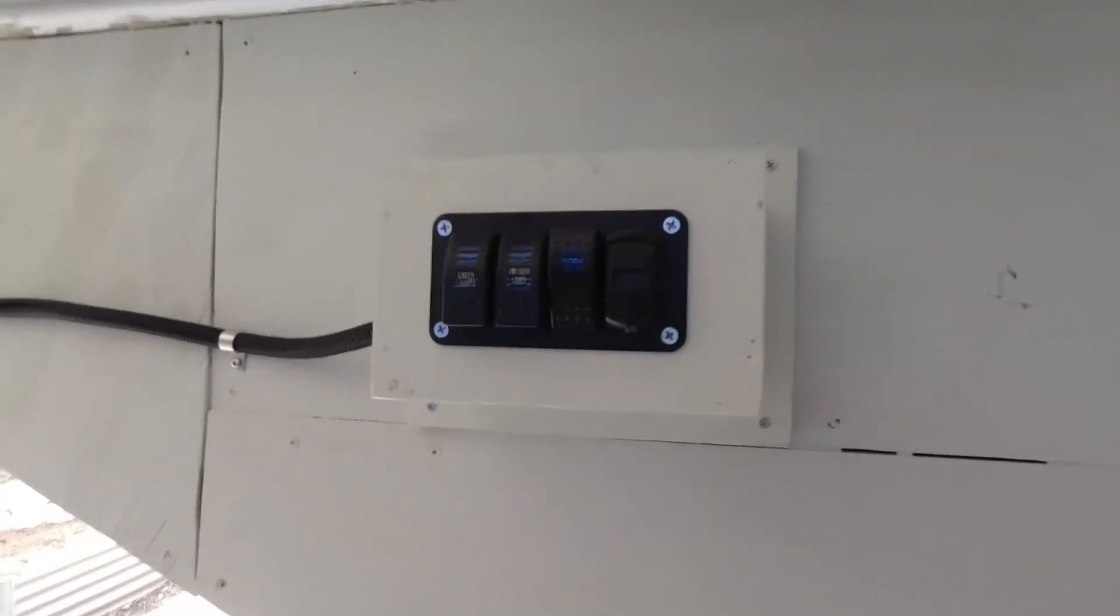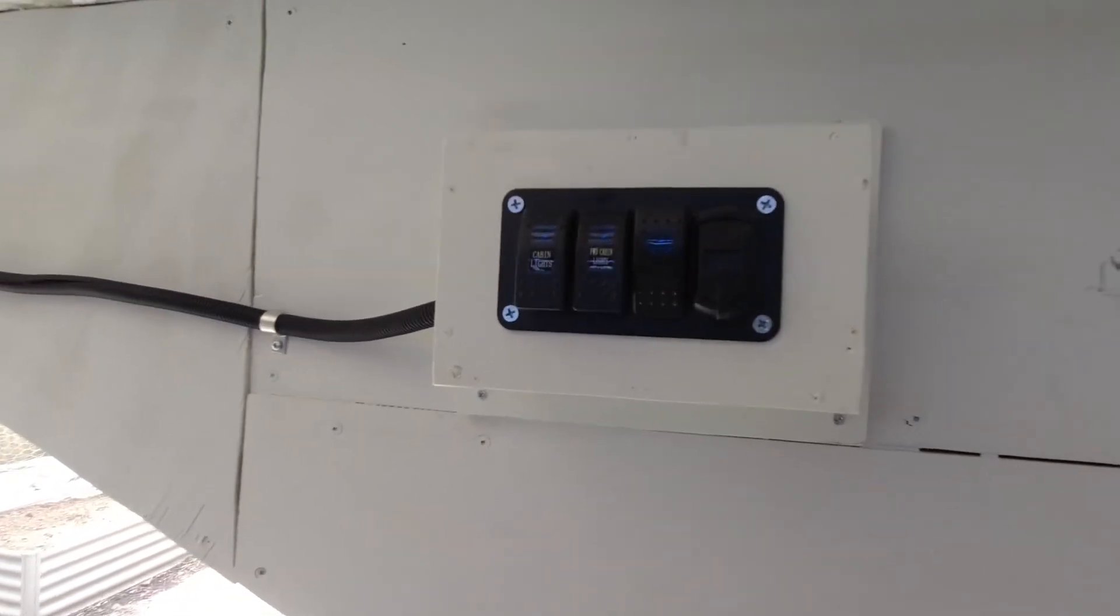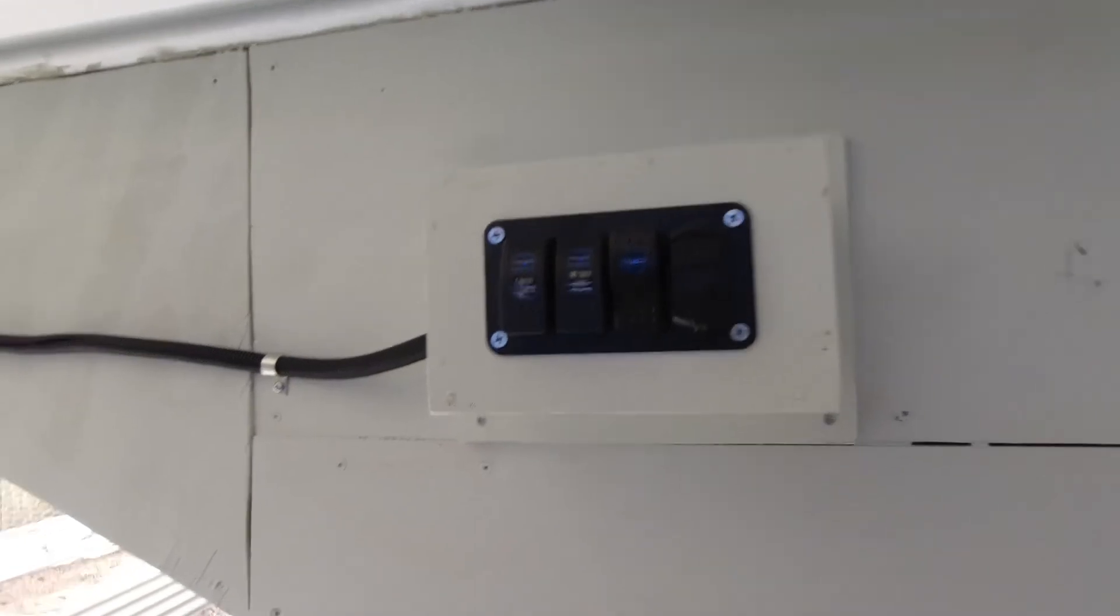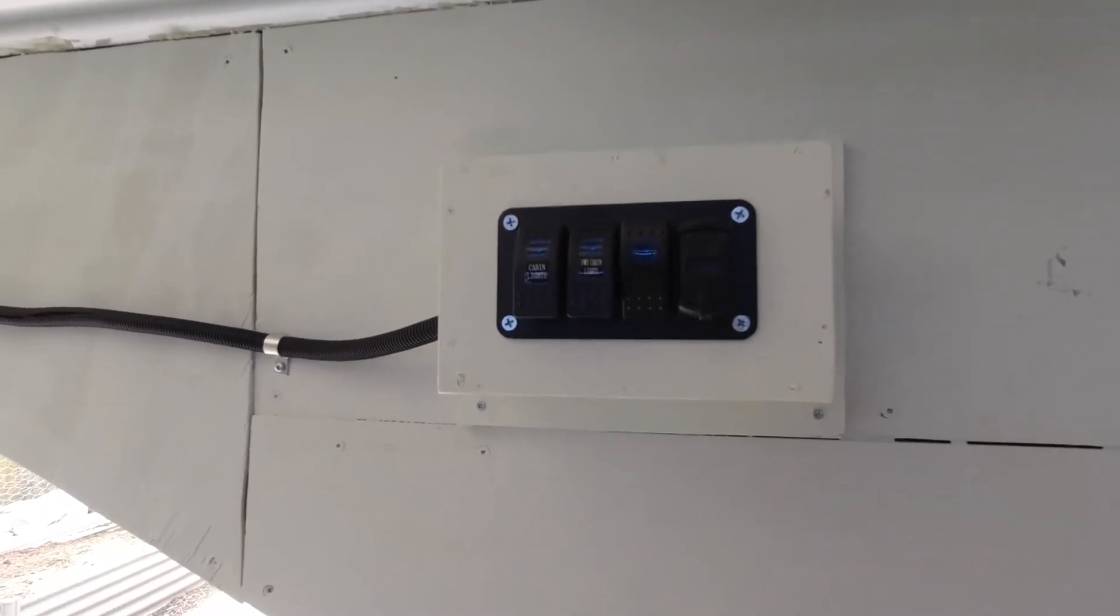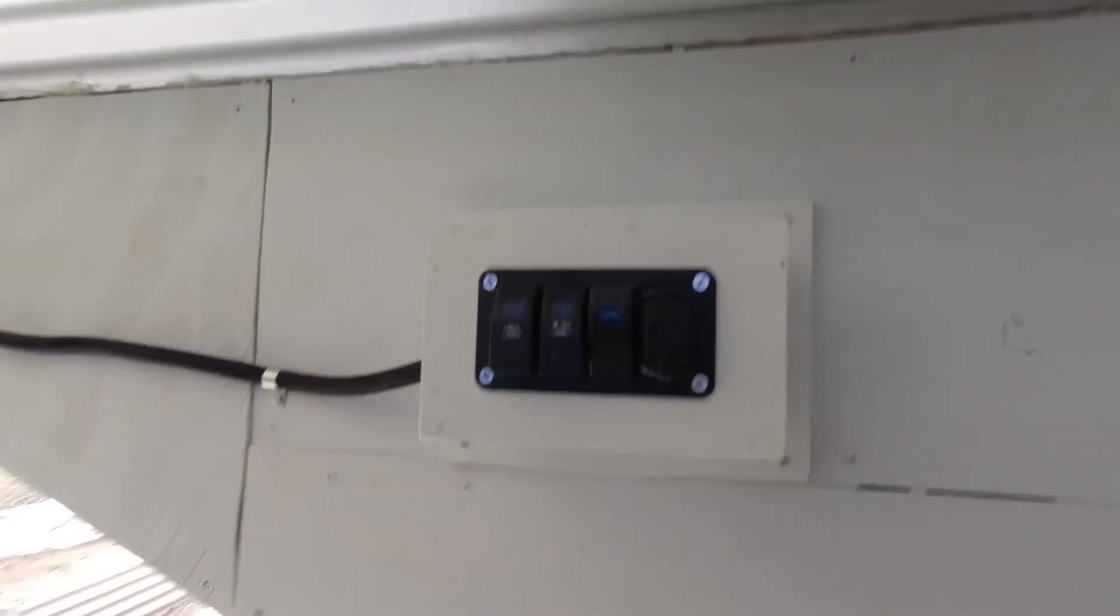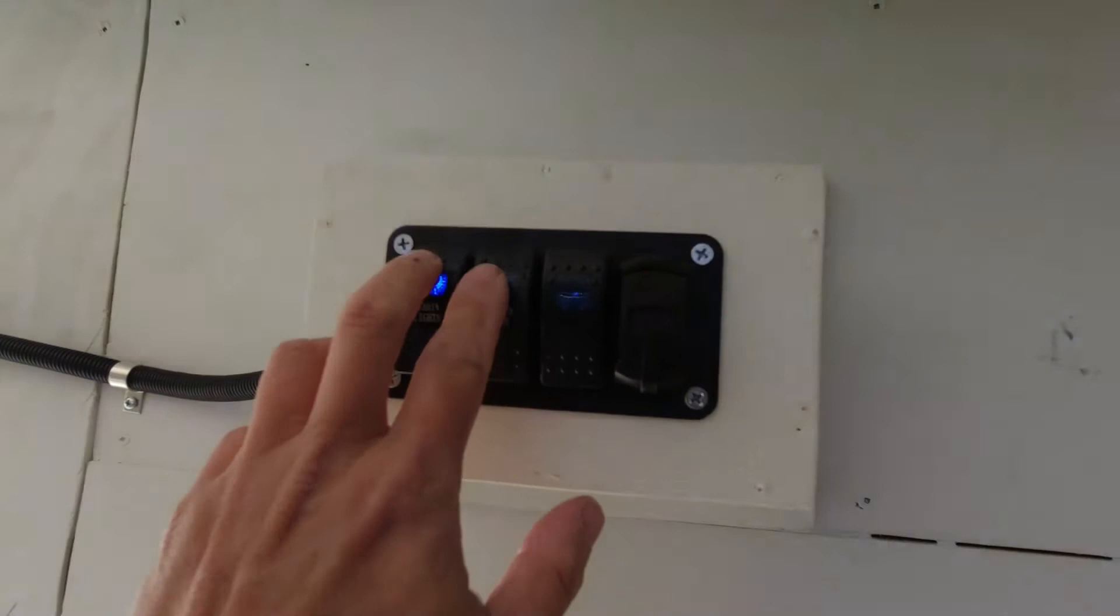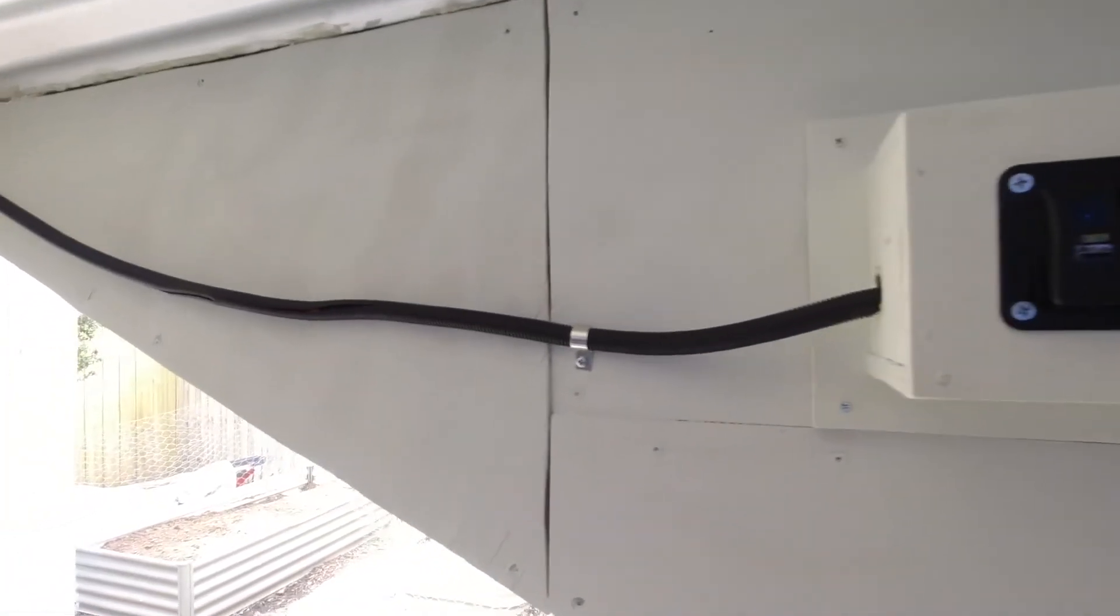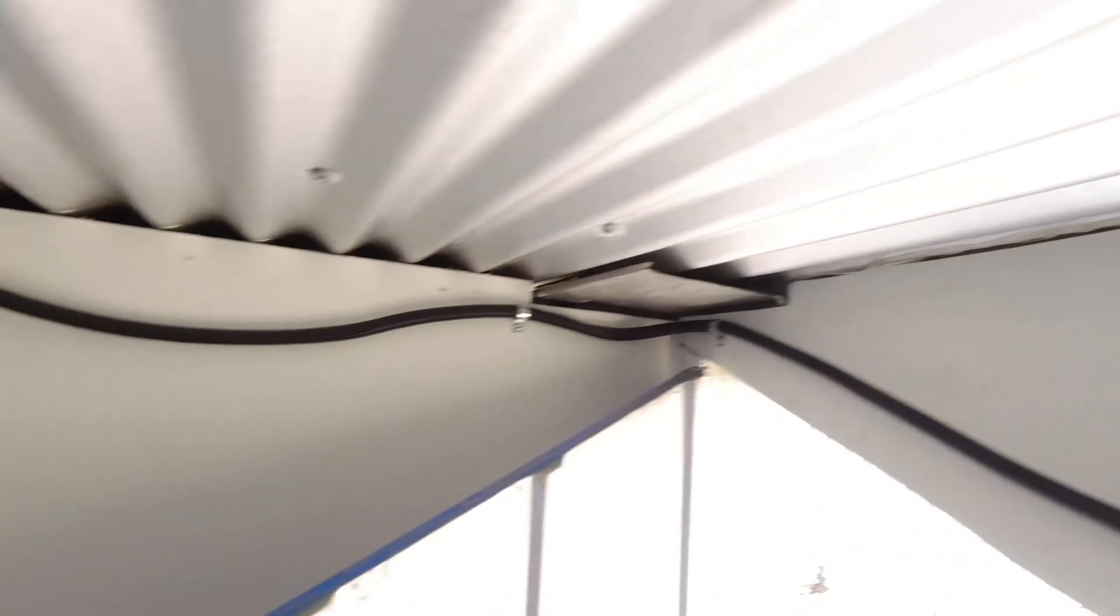So let's start with the LED light switch box. I purchased a 4 gang switch only because it was easier just to find a 4 gang switch, but really I only use these two. So there's only a positive 12-volt cable that goes along here.